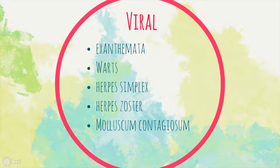Systemic viral infections that present with skin lesions are exanthematous viral fevers such as varicella, measles or rubella, and also dengue fever. In varicella or chickenpox, the rashes are vesicular and turn to scab. Other exanthemas are maculopapular and appear at various distributions and stages of the disease depending on the type of infection. Viral infections of the skin can be localized and are mostly highly contagious through direct contact with the lesion.